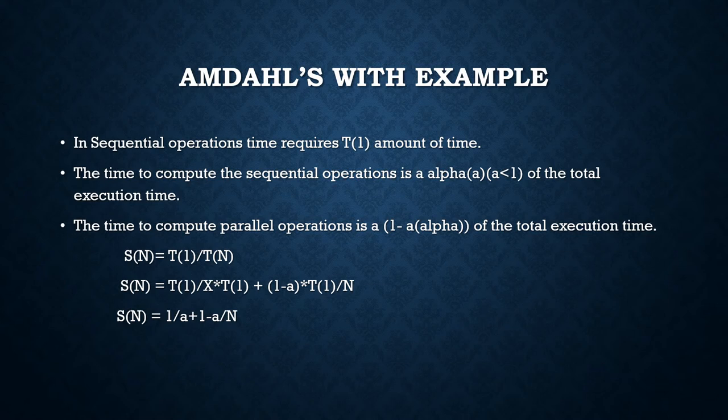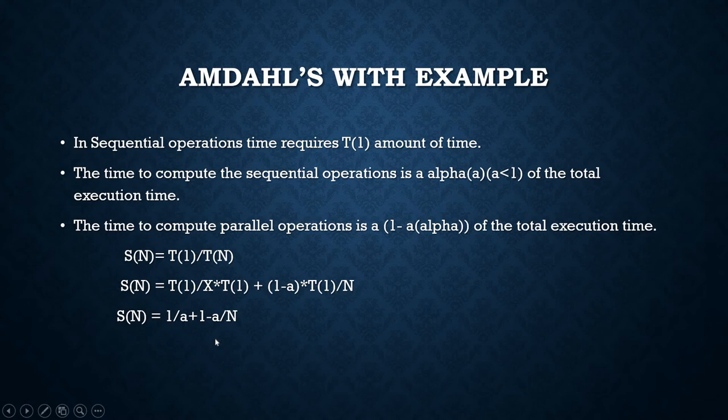The total execution time T(n) accounts for both sequential and parallel portions. The time to compute the parallel operations is (1 - alpha). Therefore, the speed-up S(n) can be calculated as T(1) divided by T(n). By dividing through by T(n), we obtain the Amdahl's law formula. Remember, the value of alpha is between 0 and 1.